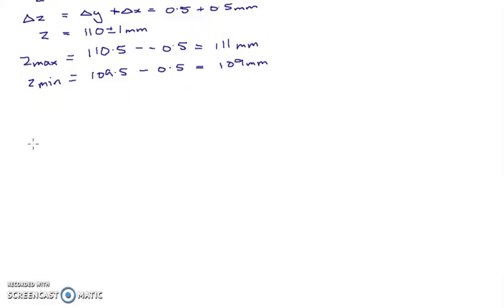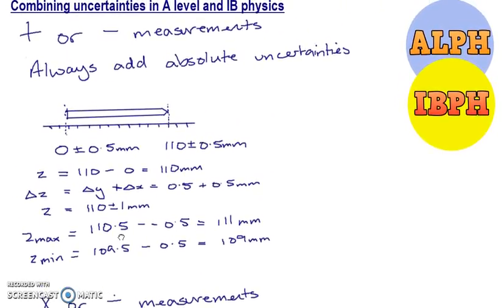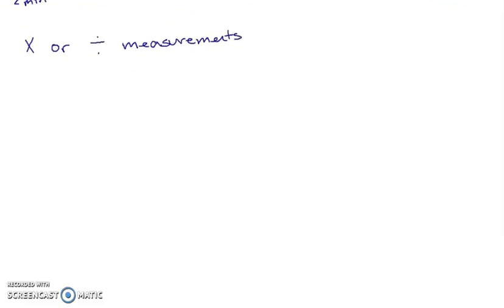Our second situation is if you're multiplying or dividing measurements. Building on what we did last time with absolute uncertainties and percentage uncertainties, for adding and subtracting you always add the absolute uncertainties. For multiplying and dividing you always add the percentage uncertainties.